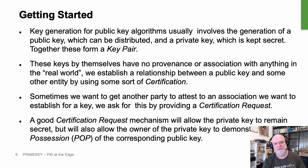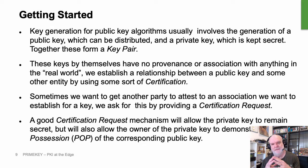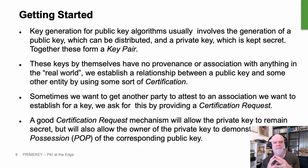These keys by themselves have no provenance or association — you can't look at a private and public key and say that represents a particular organization or individual. We need some way of actually building this association between an individual or organization and the public key that is purporting to represent them. This is done by certification. The X.509 certificate is basically an example of that. Often we want to get another party to attest to an association — somebody who has more authority than we have — and we do this by giving them a certification request.